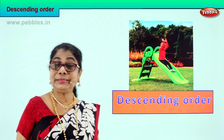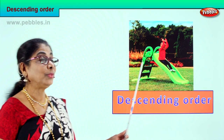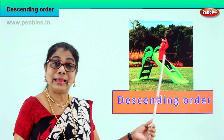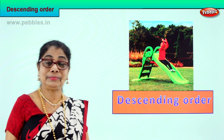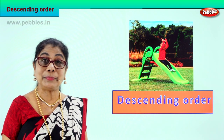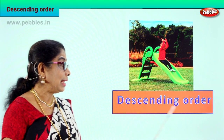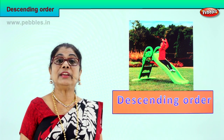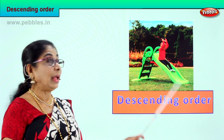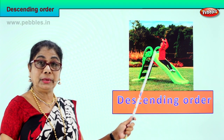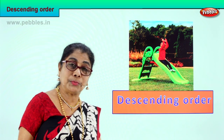Hi children, look, the little girl is sliding down. We are going to learn something different — descending order. What is the meaning of descent? Coming down from big number to small, small, smaller.